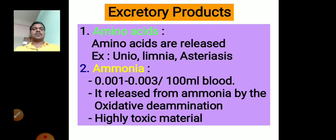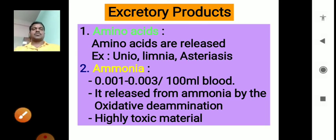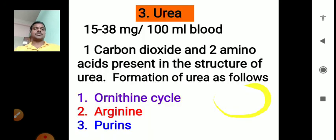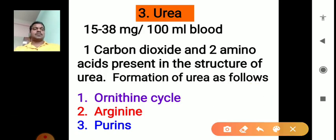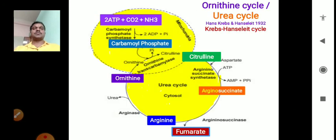There are three main excretory products: ammonia, urea, and uric acid. We discussed how toxic ammonia is in our body and the formation of ammonia into ammonium hydroxide (NH4OH). Regarding urea, we covered the ornithine cycle, also called the urea cycle or Krebs-Henseleit cycle.